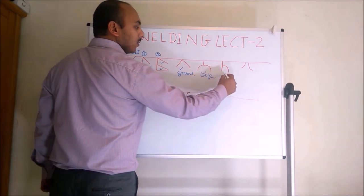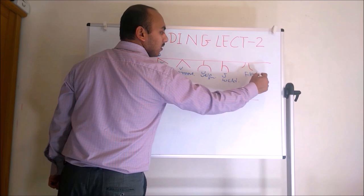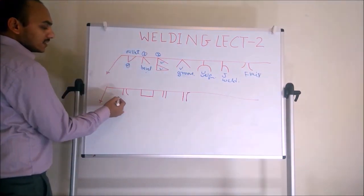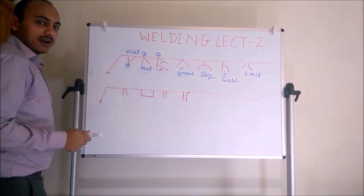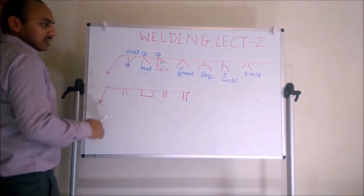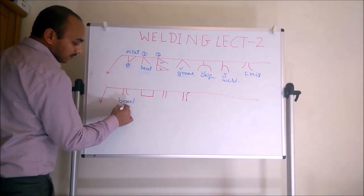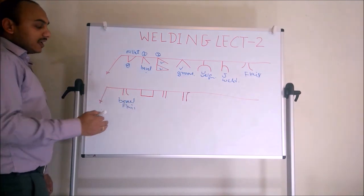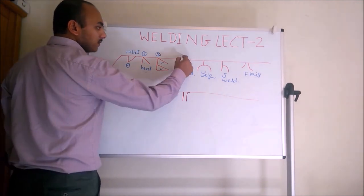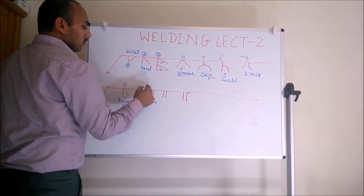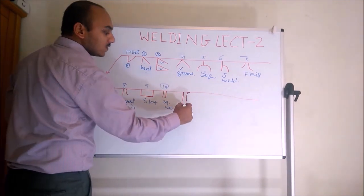This is the J weld symbol. This one is the flare weld symbol. This is the flare bevel weld — similar to bevel weld, one surface is at 90 degrees and one has a groove prepared. In flare bevel weld, one surface is at 90 degrees and one is curved. This is the slot weld symbol. This is the square weld, and this is the flange weld.